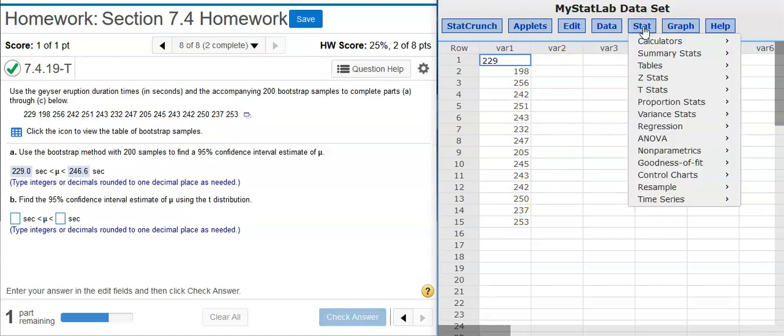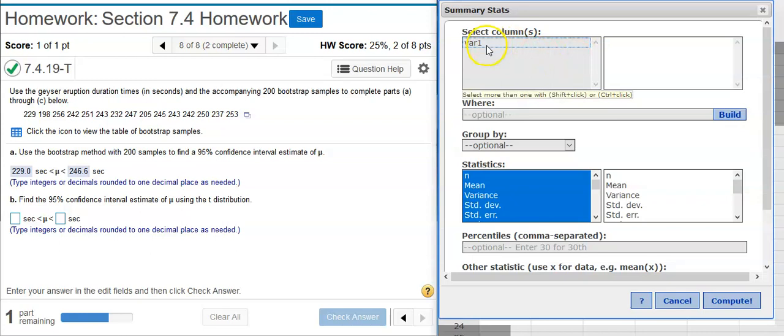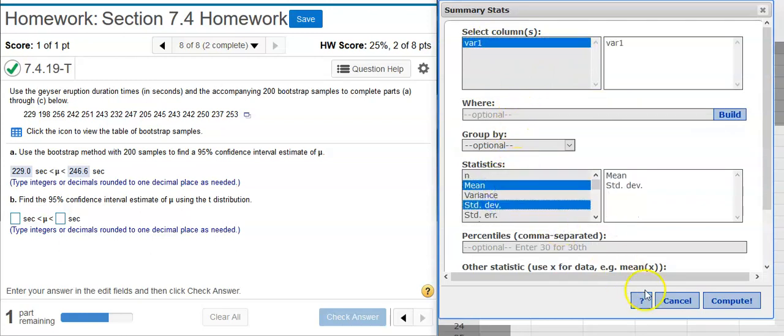Now for this one sample of 15 values, I'm going to calculate the mean and the standard deviation. To do that, I go to Stat, Summary Stats, Columns, select the column. It's the only column that's got data here. Then I want the mean and the standard deviation.